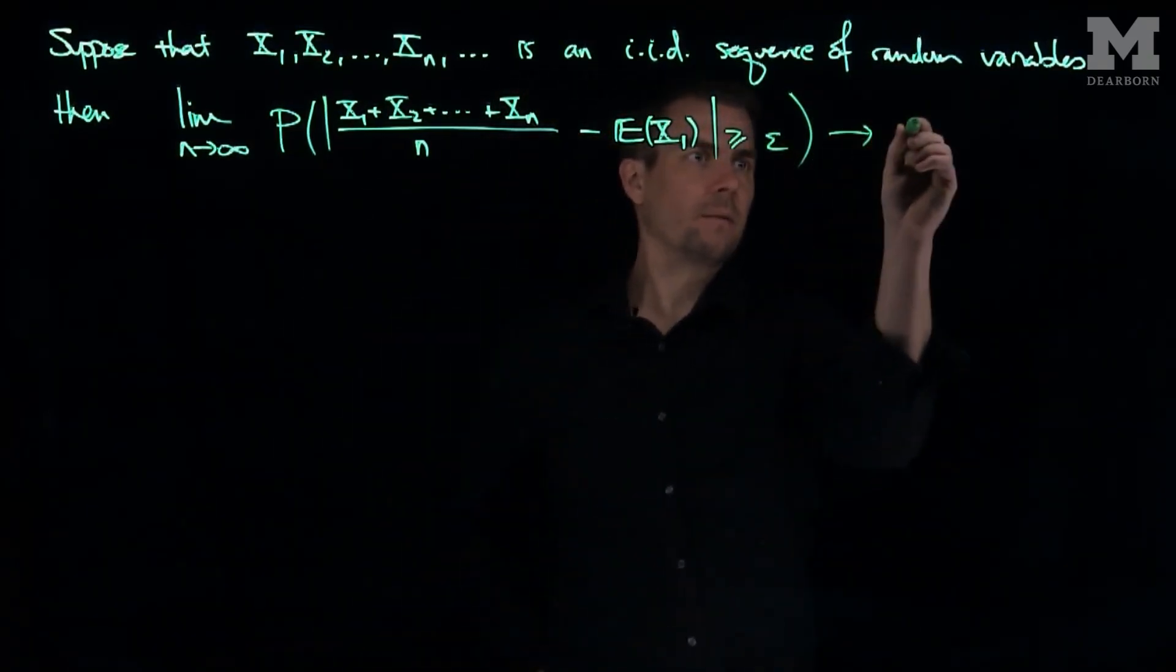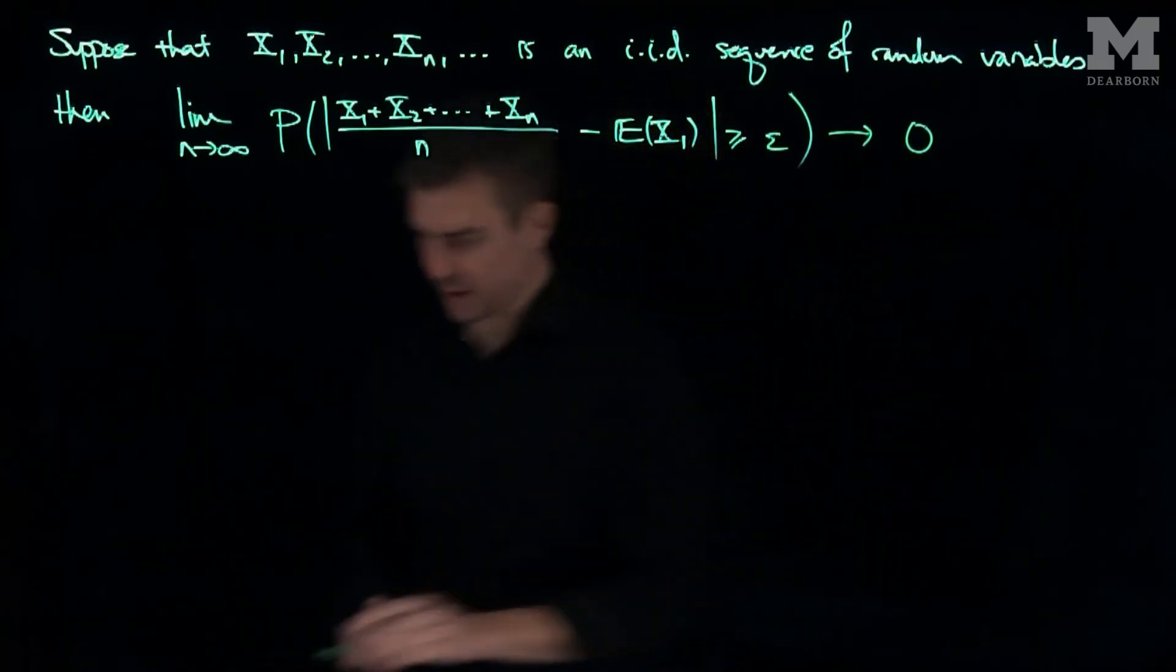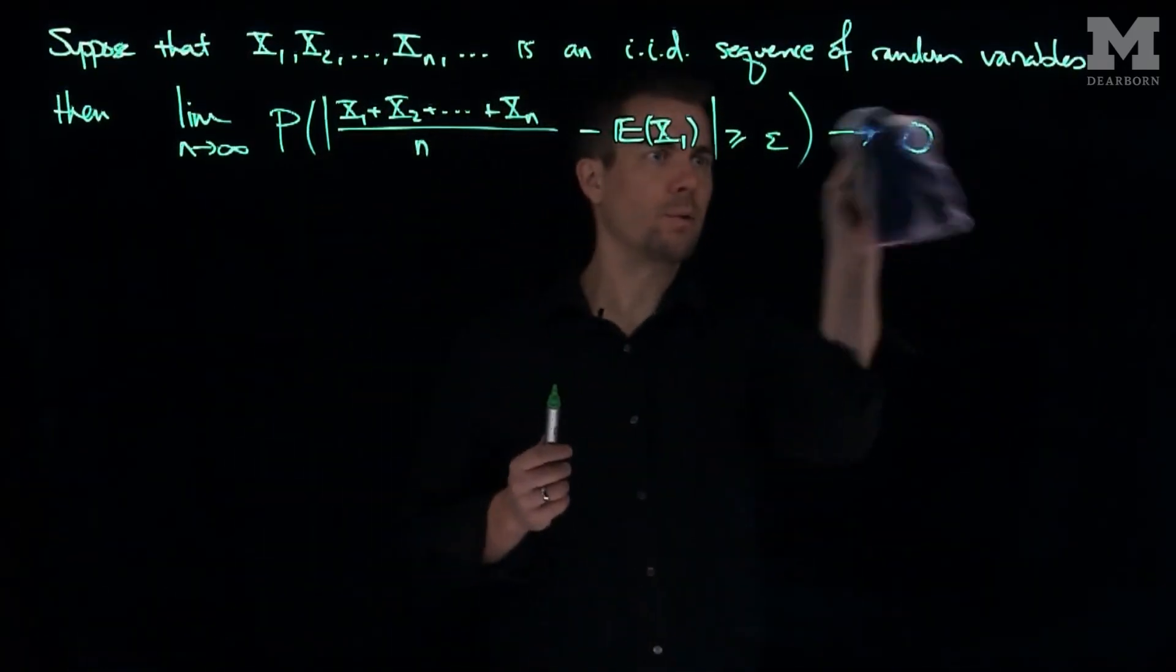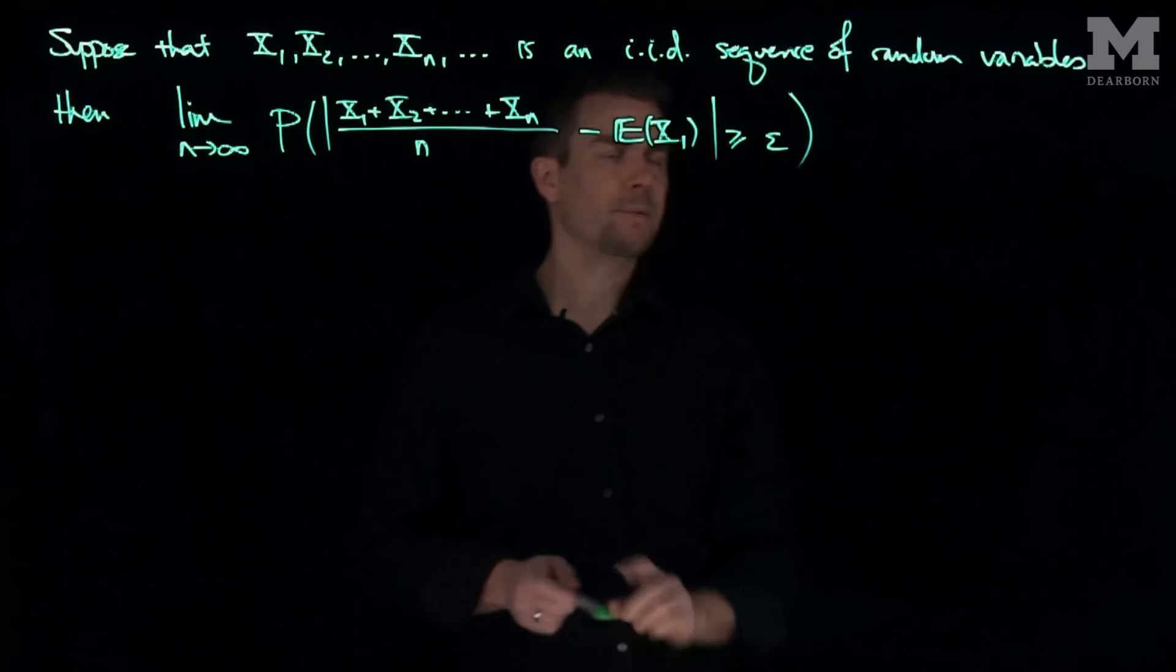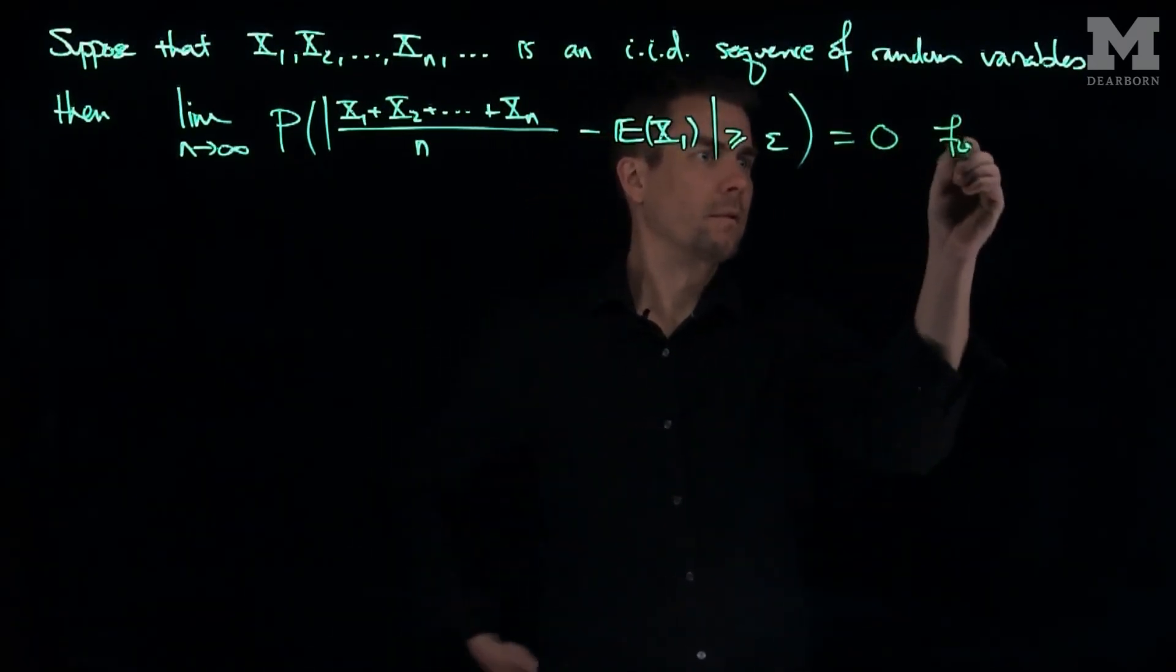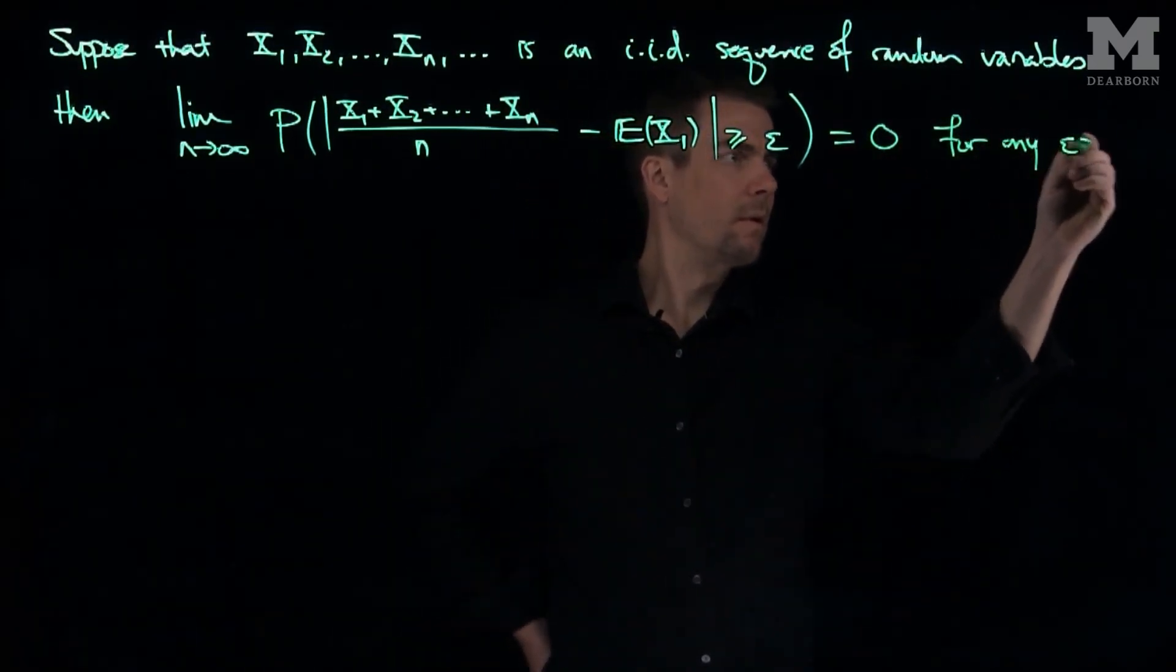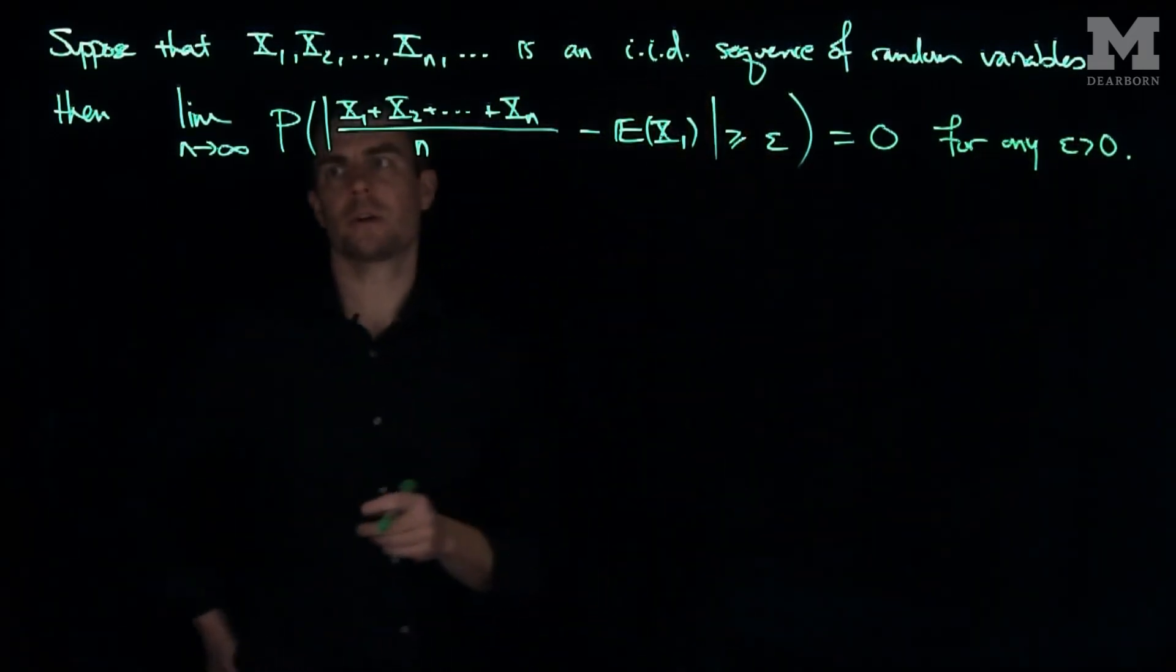epsilon tends to zero, or is equal to zero, because I have a limit over there, so it's equal to zero for any epsilon greater than zero.